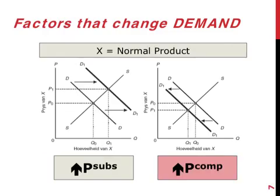We can also look at increases in the prices of substitutes and complements. Using the butter and margarine example: if the price of butter suddenly shoots up, you will be buying a smaller quantity of butter — a reduction in the quantity demanded. But you still need to put something on your bread, so you will be eating more margarine. The whole demand curve for margarine moves towards the right, and the equilibrium price and quantity are both higher.